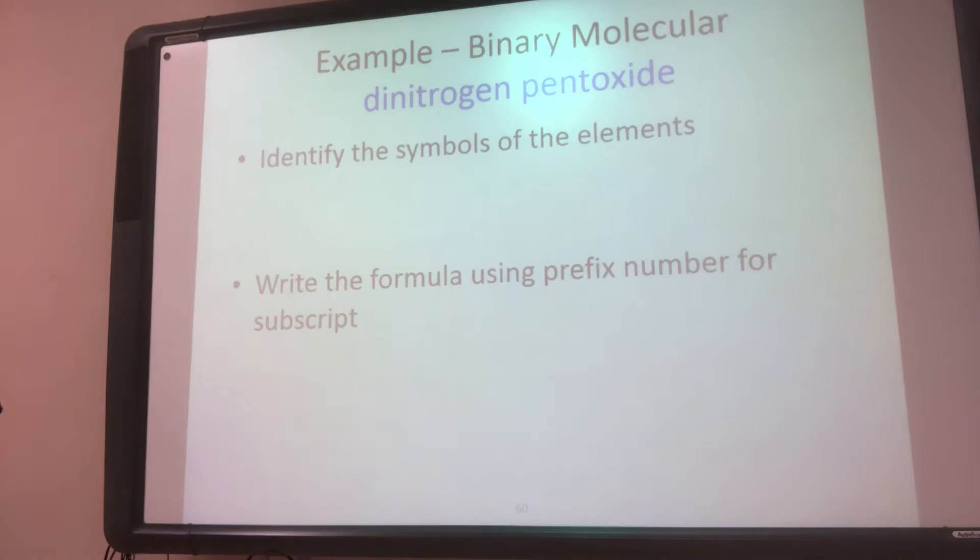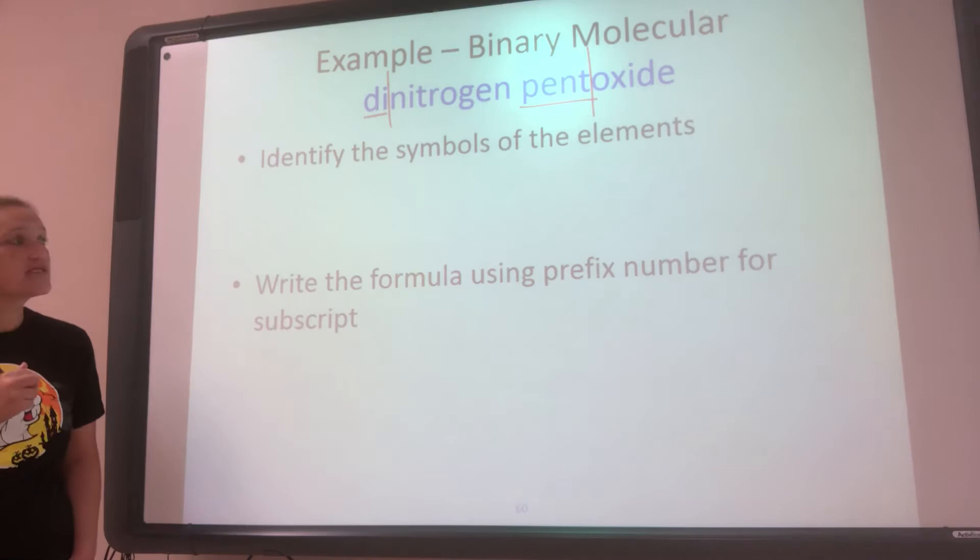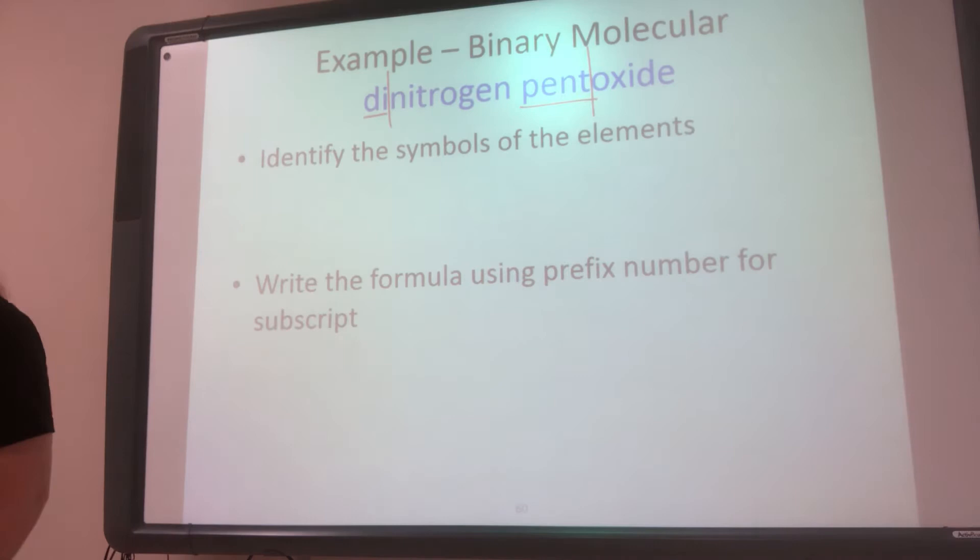So this says dinitrogen pentoxide. So we should start to see, oh, there's a prefix, there's a prefix. So we should see the prefixes, those should kind of stand out to us. When we see the prefixes, the only time we have a prefix is a molecular compound. So it's always the prefix, the element, the prefix, the element. So I know that this is an element and this is an element. So nitrogen, what's the symbol for nitrogen? And oxide, so that would just be oxygen, and the symbol for that is O.